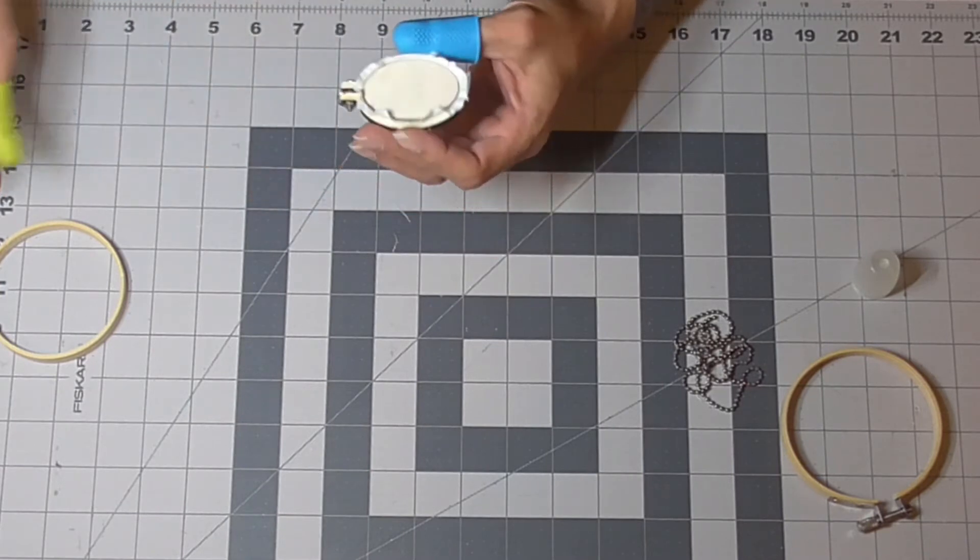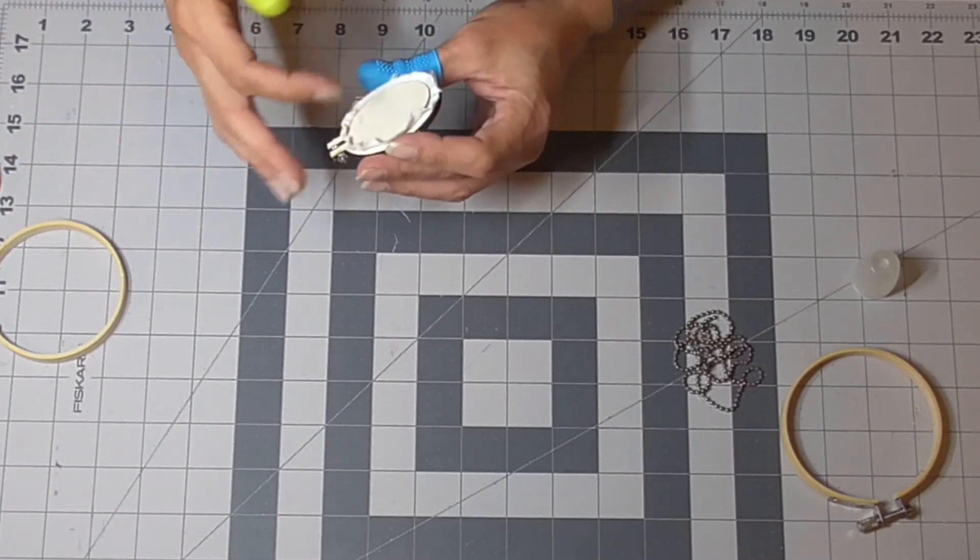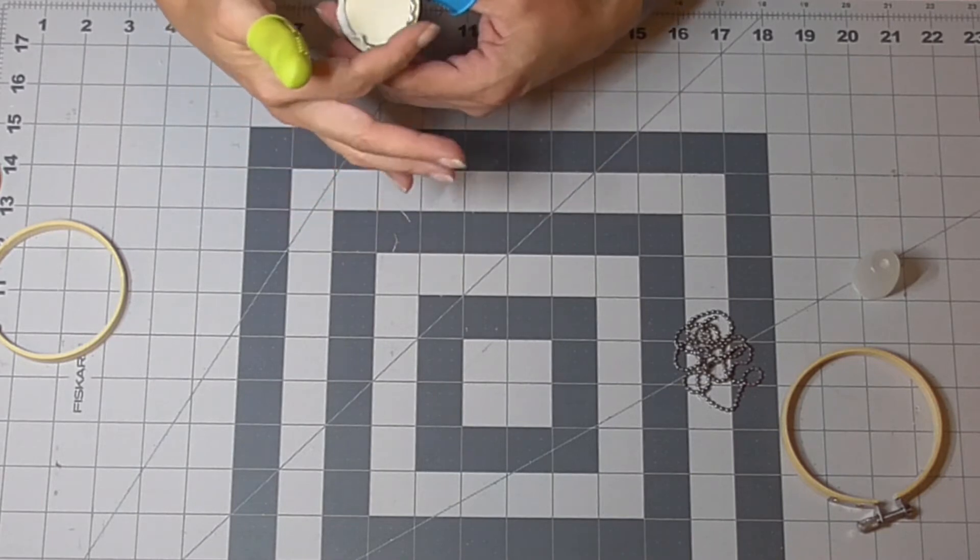And then you can trim off. Actually, if you have a pair of nail scissors they work best because they are on a little curve.